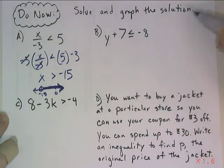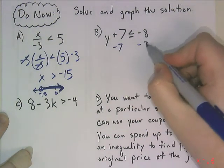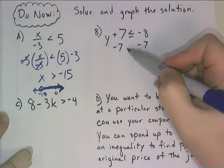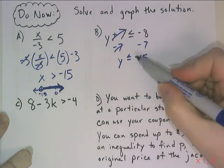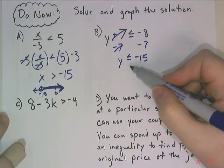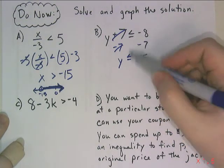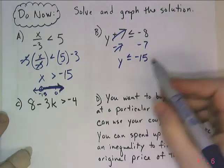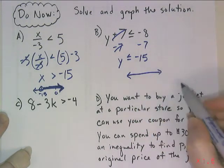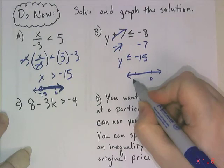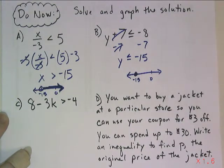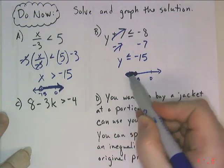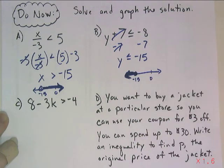For the second problem, subtract 7 from both sides to undo adding 7, giving y ≤ -15. Since I did not multiply or divide by a negative, the inequality direction stays the same. Graphed with a solid dot on negative 15 and an arrow to the left.